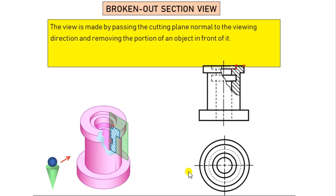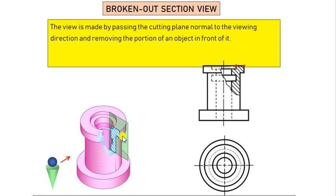The broken out section view is made by passing the cutting plane normal to the viewing direction and removing only a portion of the object in front of it. In this case, not a complete or full section or offset section is shown — only a broken out section. This means only a small part is broken, and only that much plane is considered, because it serves our purpose without needing a full or offset section.